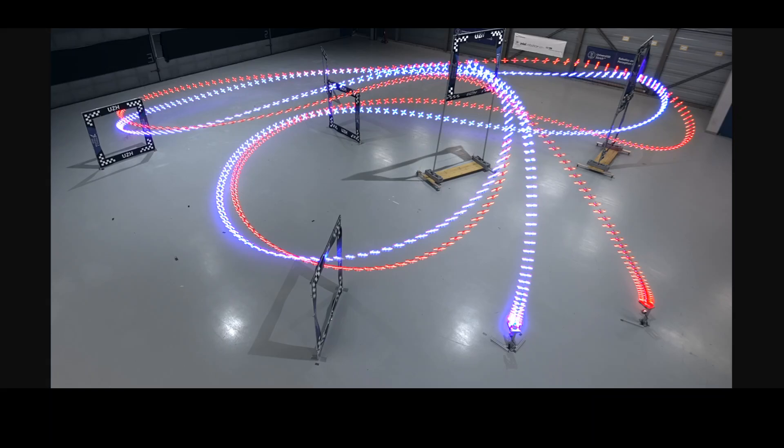Its integrated inertial measurement unit measures acceleration and speed while an artificial neural network uses data from the camera to localize the drone in space and detect the gates along the racetrack.